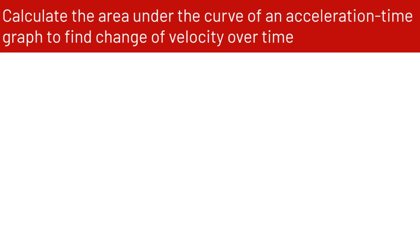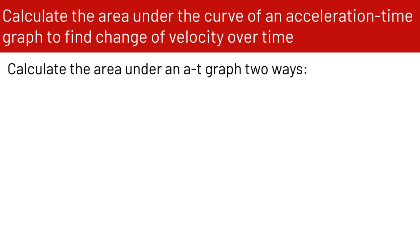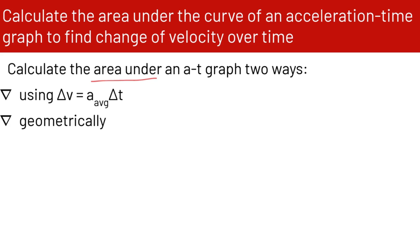We can also calculate the area under the curve of an acceleration-time graph to find the change in velocity over time, similarly to how we found displacement using the area under a velocity-time graph. We calculate the area under an acceleration-time graph in two ways: using delta v equals average acceleration times delta t, or geometrically.